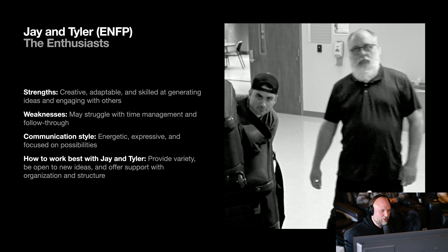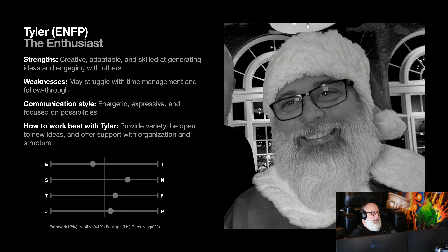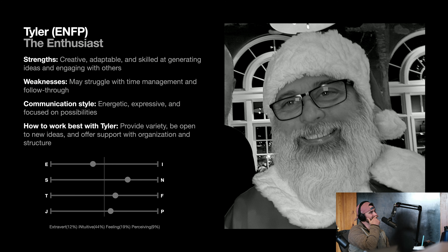Except for these two guys who don't have much variation — they're both ENFPs. Jay and Tyler, same combination. The enthusiasts: strengths are creative, adaptable, skilled at generating ideas and engaging with others. Weaknesses: may struggle with time management and follow-through. Communication style: energetic, expressive, and focused on possibilities. The best way to work with Jay and Tyler is provide variety, be open to new ideas, and offer support with organization and structure.